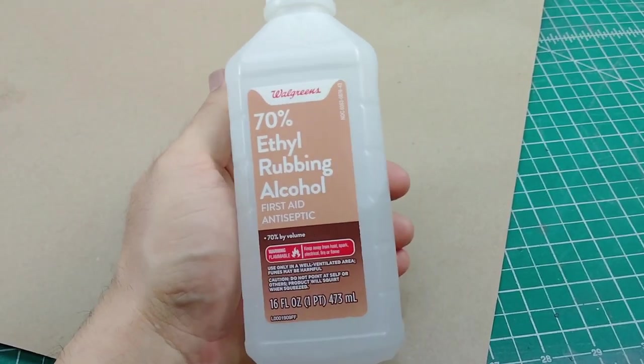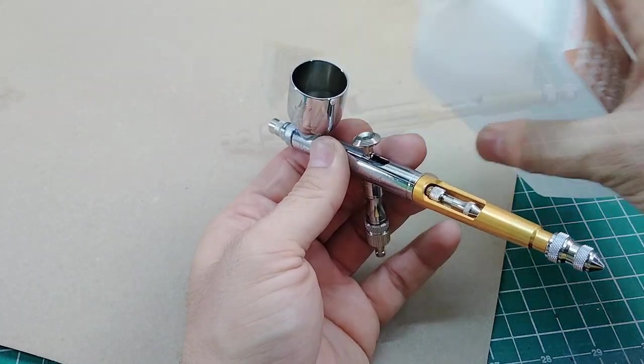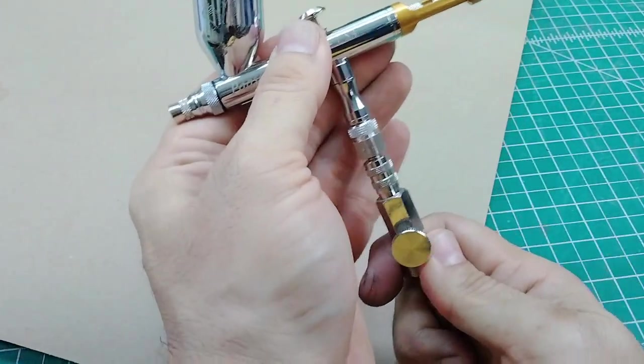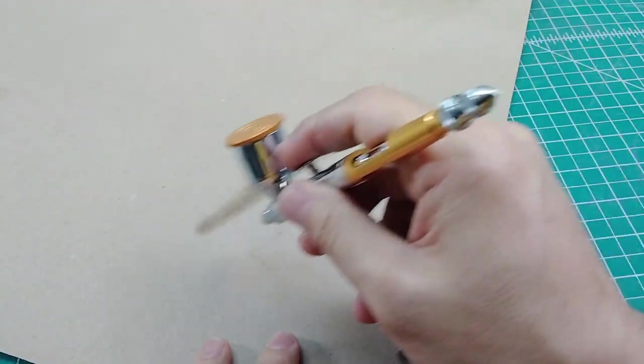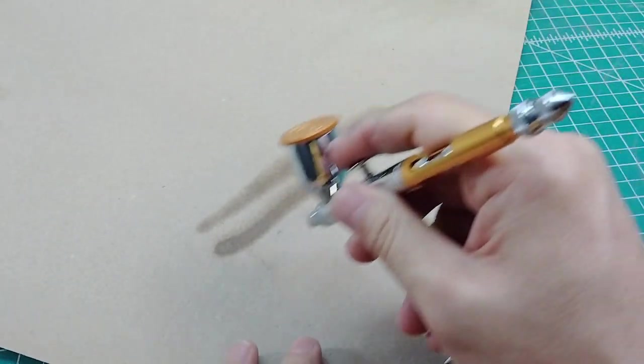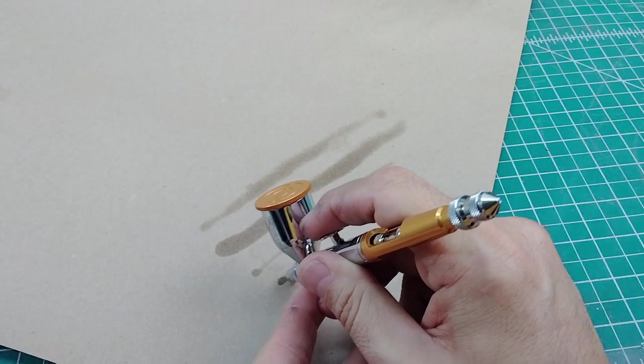The other thing I always recommend before spraying any paint is to spray something else through it that isn't going to be required for you to clean the airbrush—water, rubbing alcohol, or some type of thinner. Spraying it on a sheet of paper, this will allow you to play with the airbrush without having to go and clean it later on.